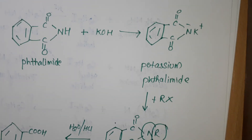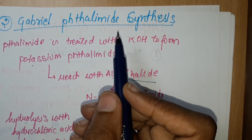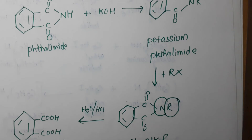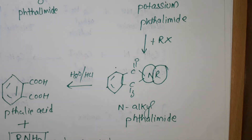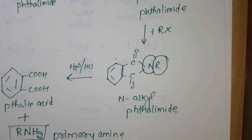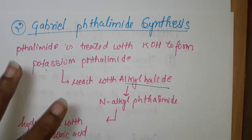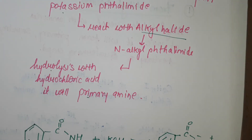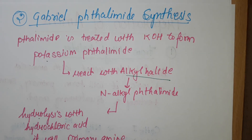This is the preparation of amines from Gabriel phthalimide synthesis. In this video I told you two preparations: the first is from alkyl halides, and the second is from Gabriel phthalimide synthesis. In my next video I will tell you the other preparations of amines. Thank you for watching.